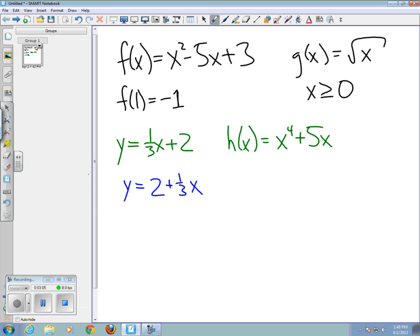We have f of x equals three minus five x plus x squared, and h of x equals five plus x to the fourth. So what I'm doing is rather than having the powers of x appear in decreasing order as you may be used to, I'm putting them in increasing order.